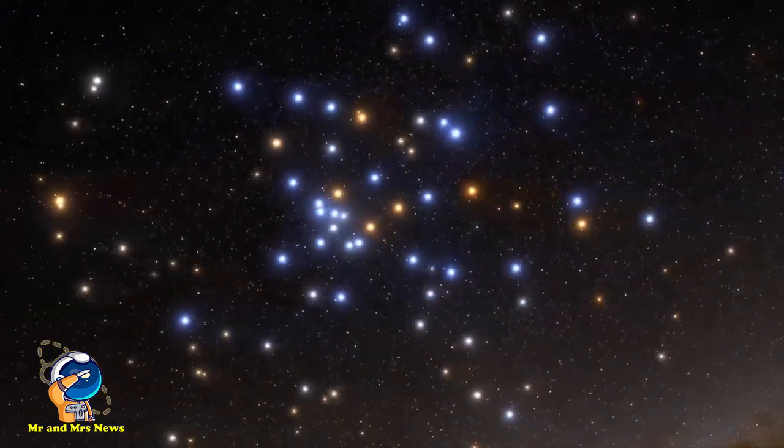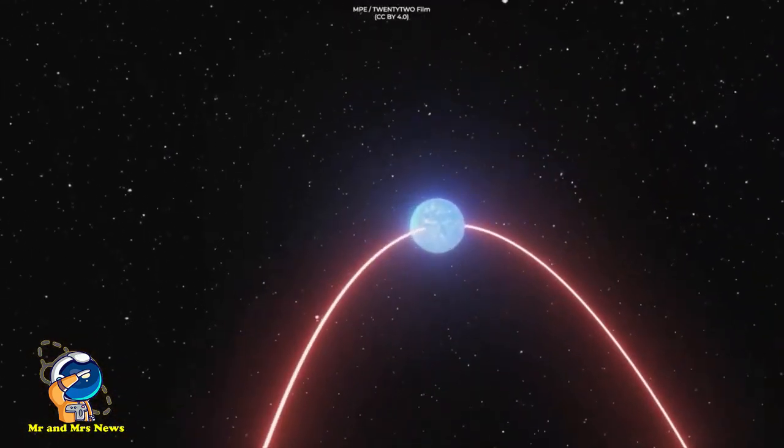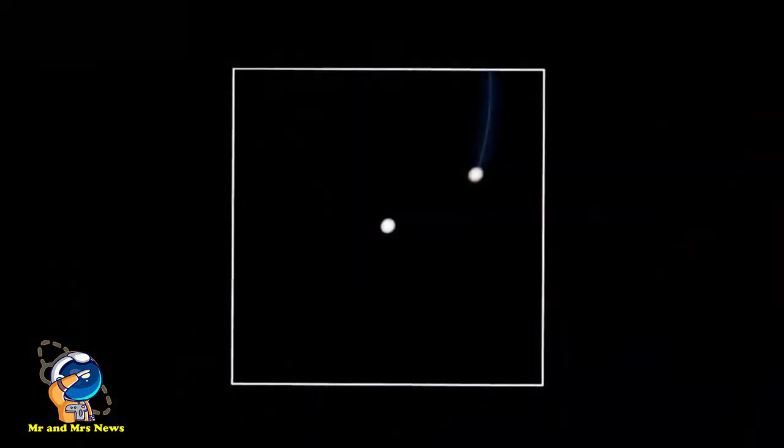Bintang S4716 sendiri merupakan bagian kelompok bintang yang disebut kluster S yang mengorbit dekat dengan pusat galaksi dan lubang hitam supermasif Bimasati. Semua bintang di kluster S ini bergerak dengan cepat tetapi bervariasi dalam kecerahan dan masa.